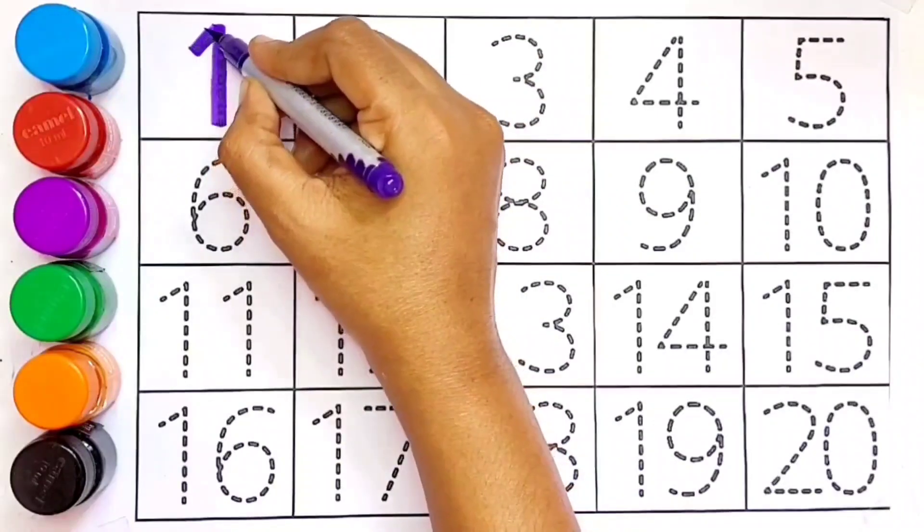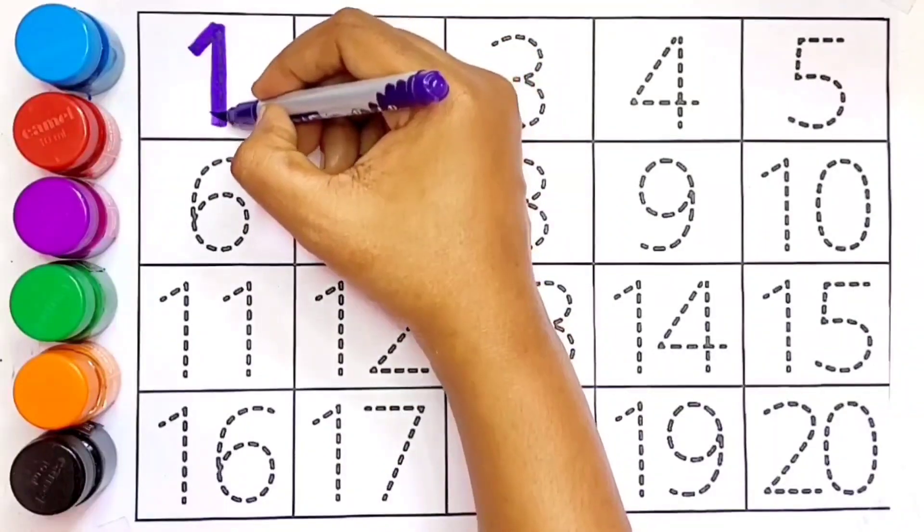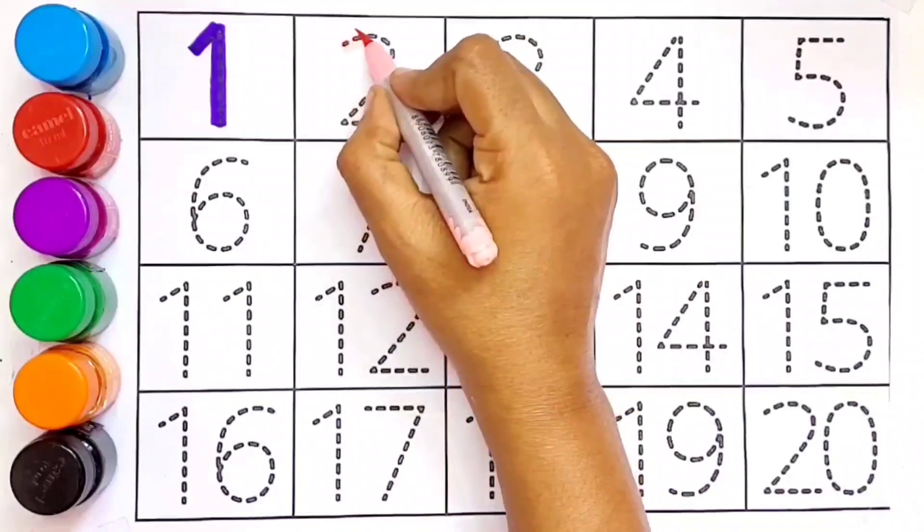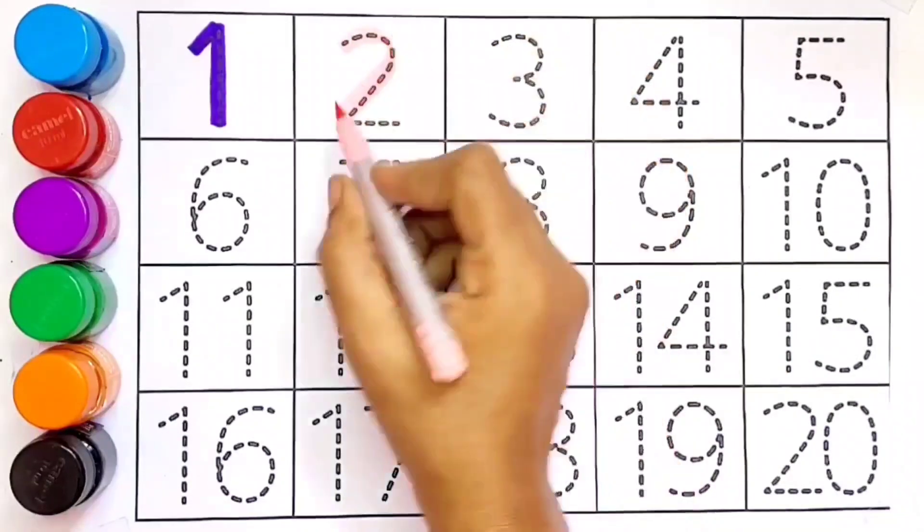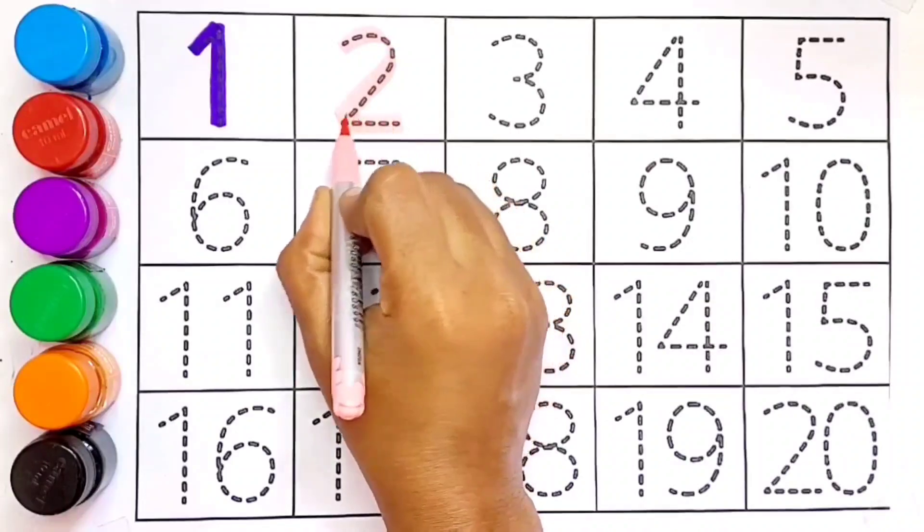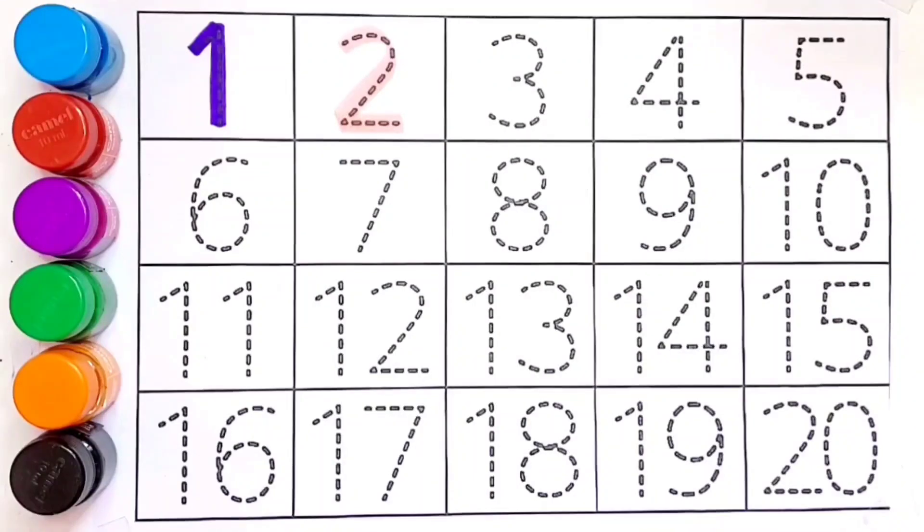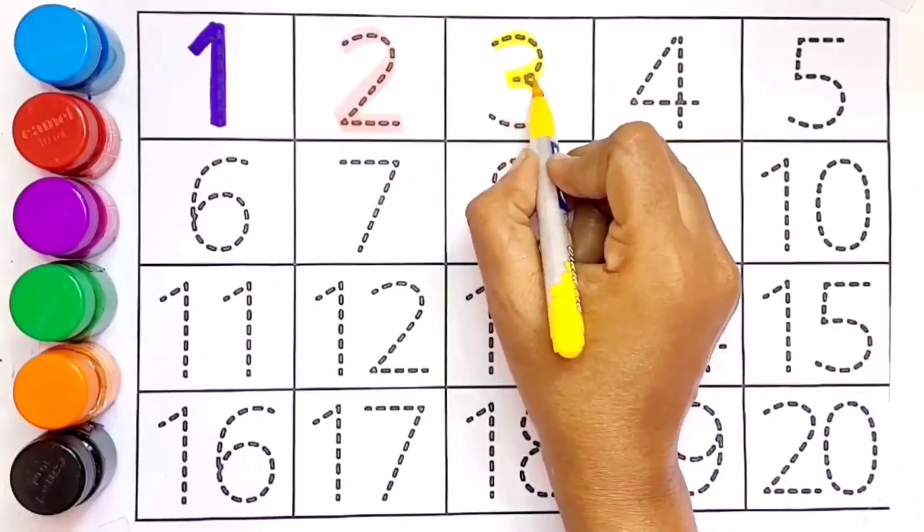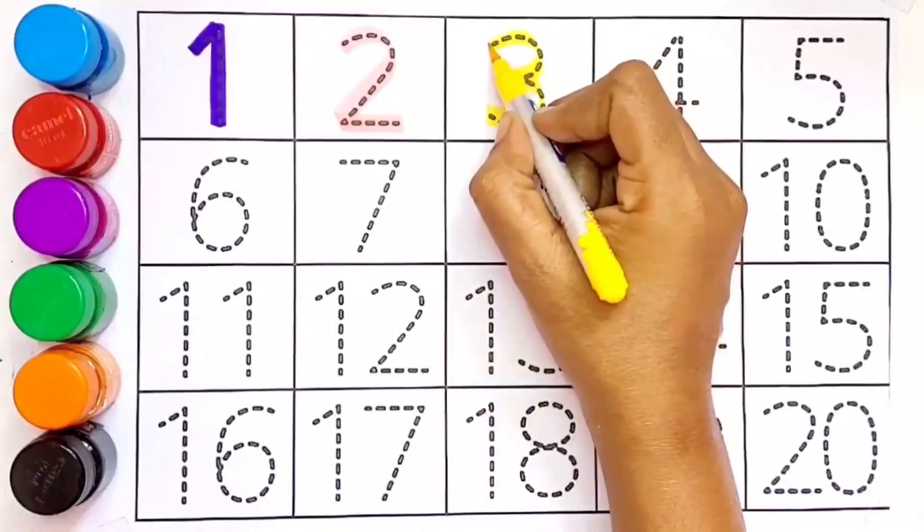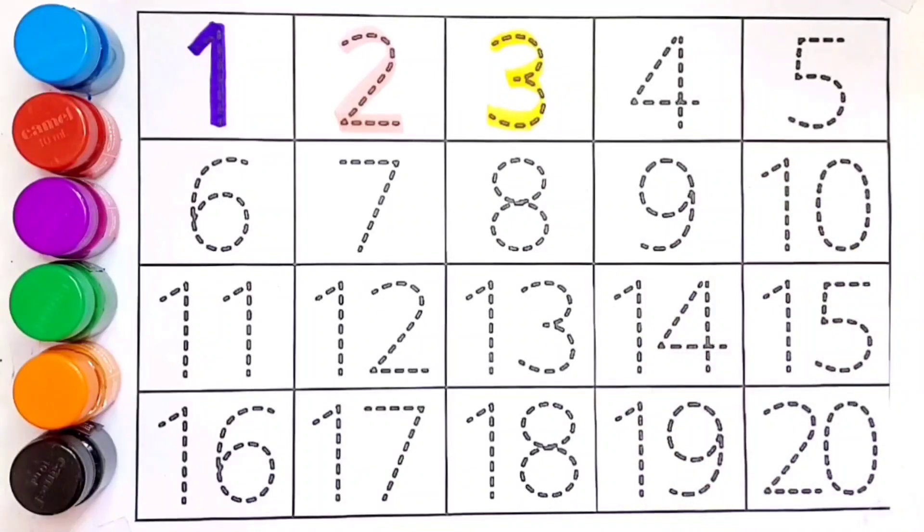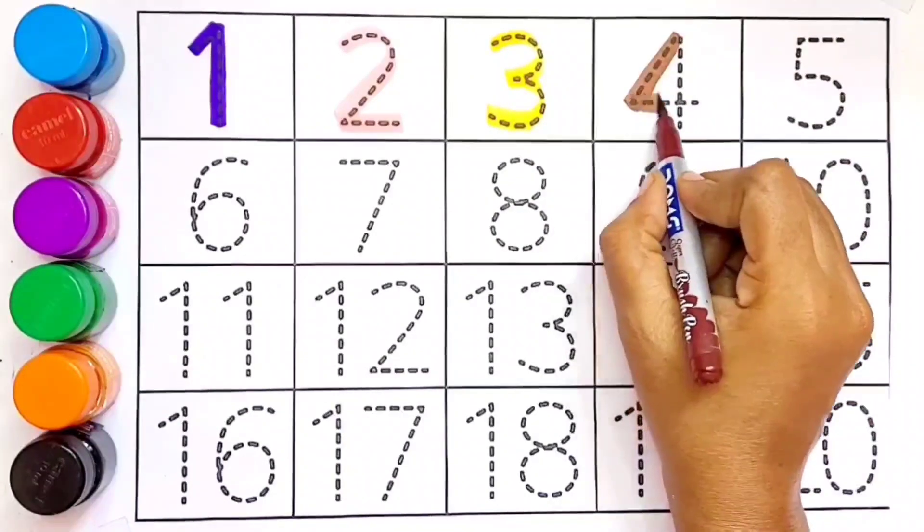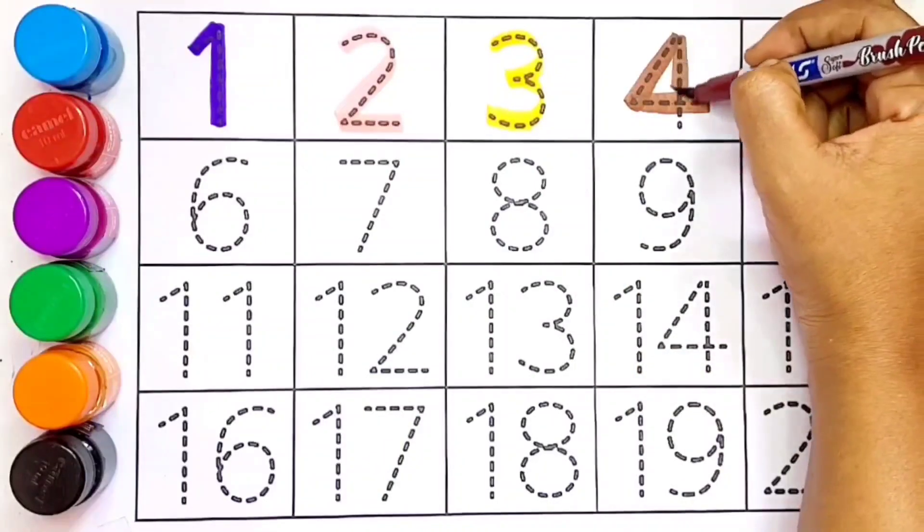1, this is number 1. 2, number 2. 3, number 3. 4, number 4.